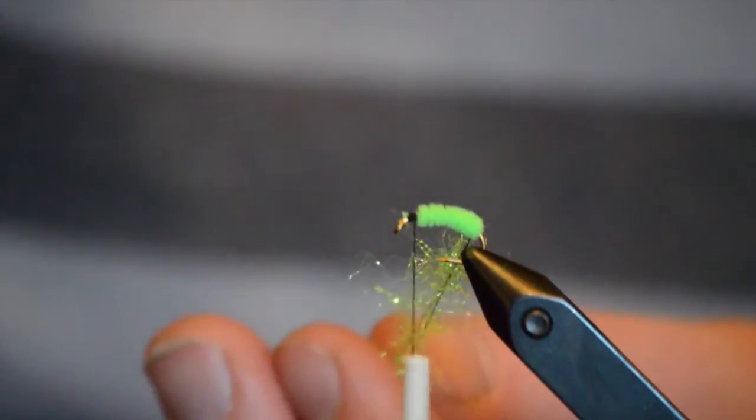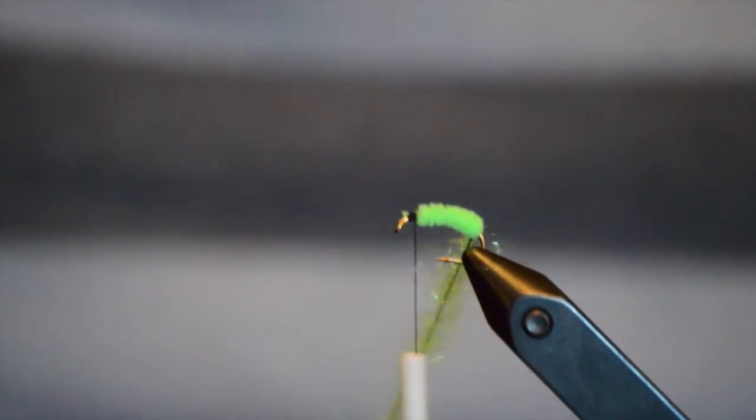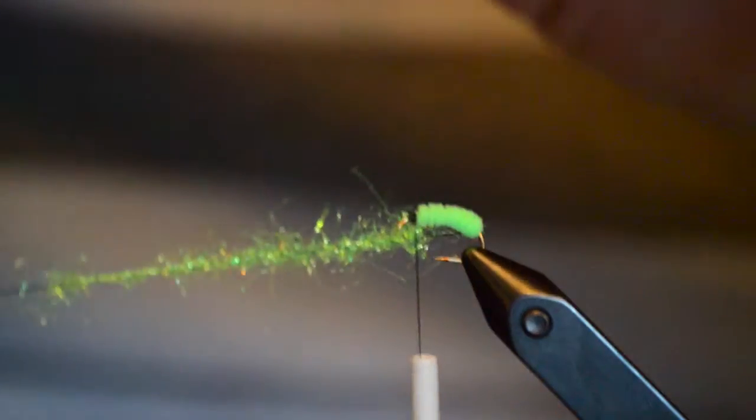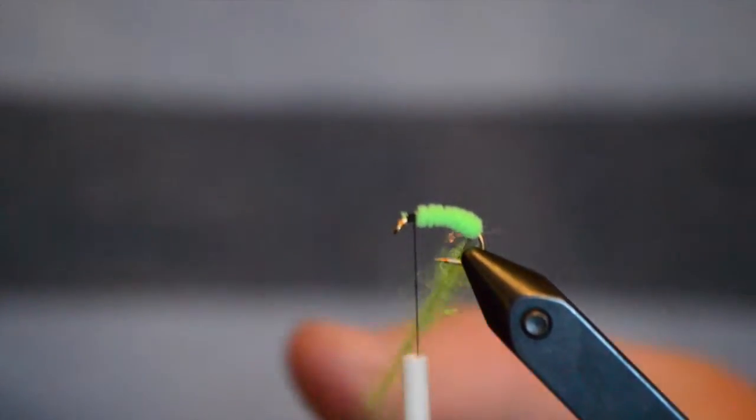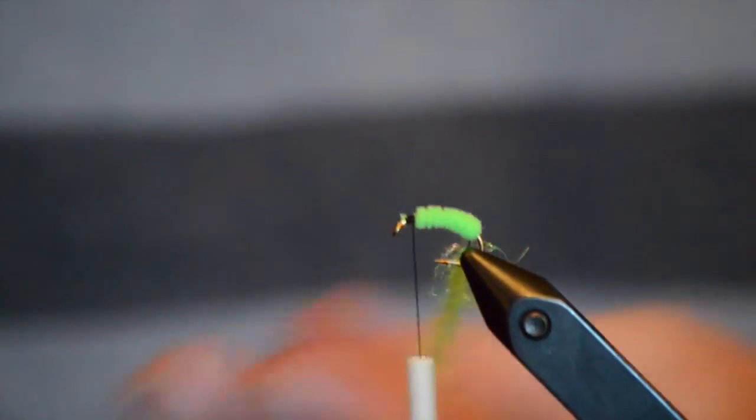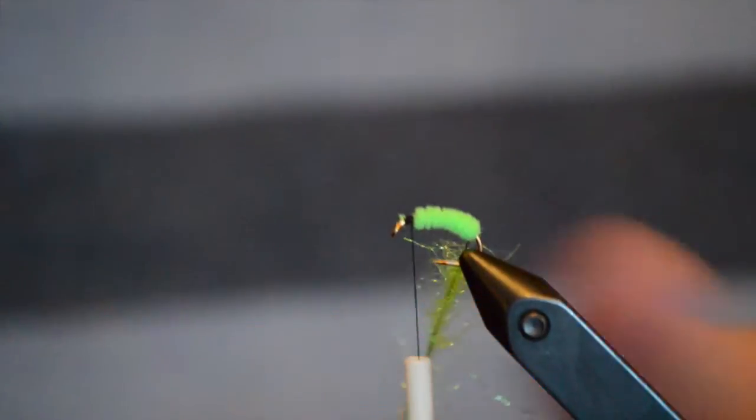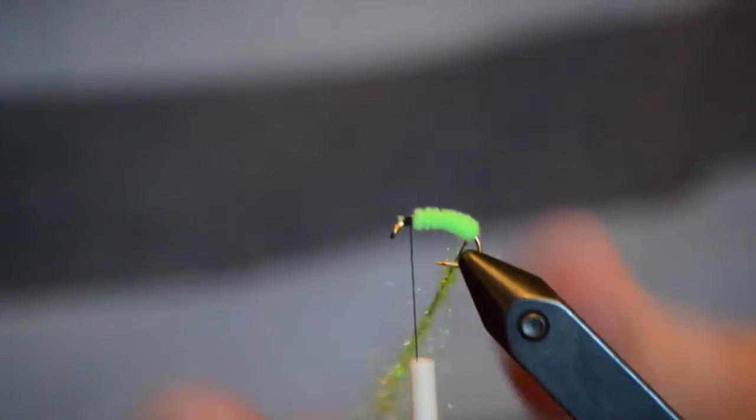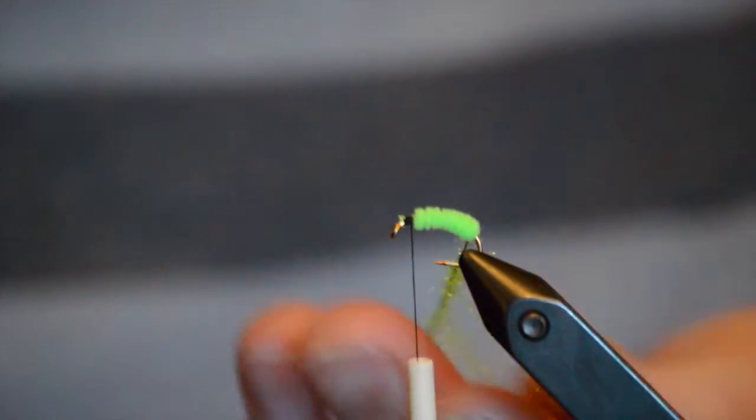We'll slide those fibers right up to the connection point of the loop and fly and spin our dubbing tool. And we'll create the brush. What you want to do is you want to stroke those fibers, just make sure you get any loose fibers out. Continue to spin the dubbing tool until you feel like it's tight.